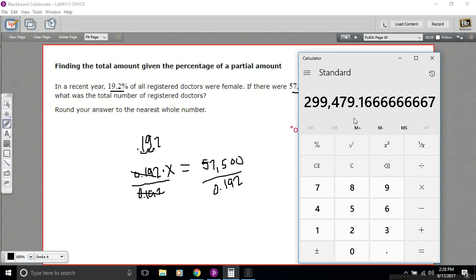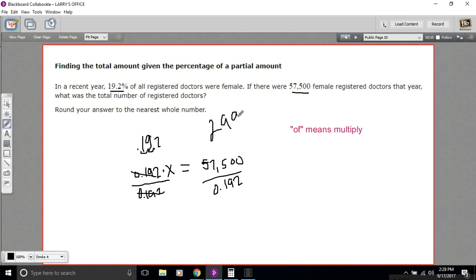They want us to round to the nearest whole number. So that would be 299,479. Wow. So 299,479 total registered doctors.